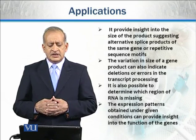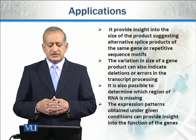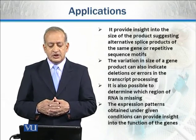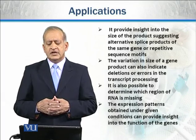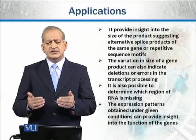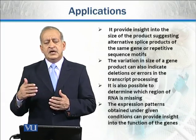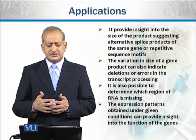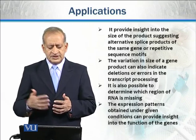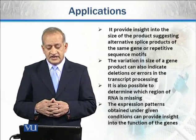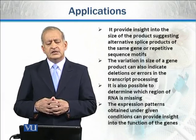Similarly, northern blotting provides insight into the size of the product, suggesting alternate splice products of the same gene or repetitive sequence motifs. Splicing products can also indicate deletions or errors in transcript processing.